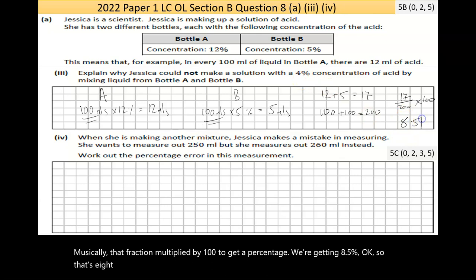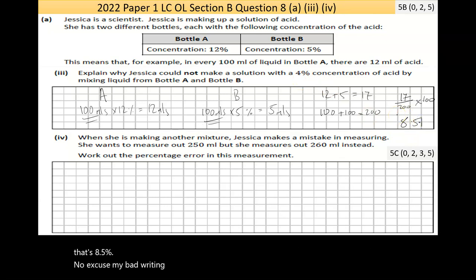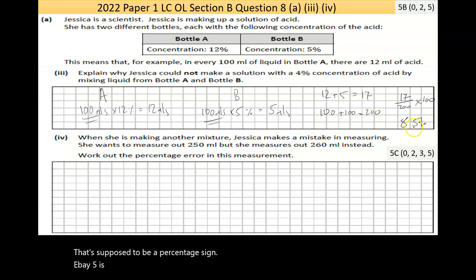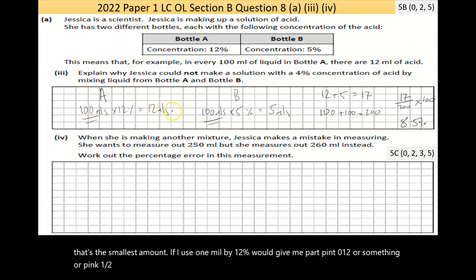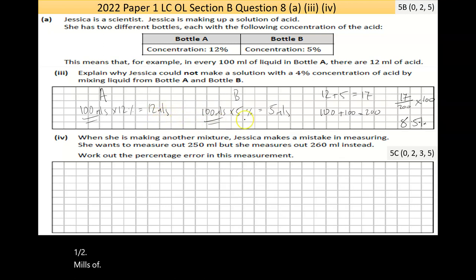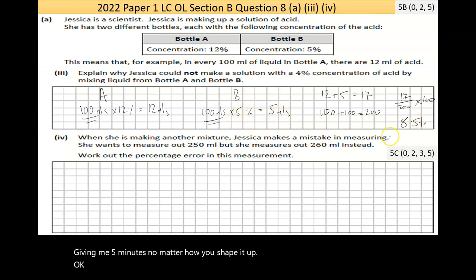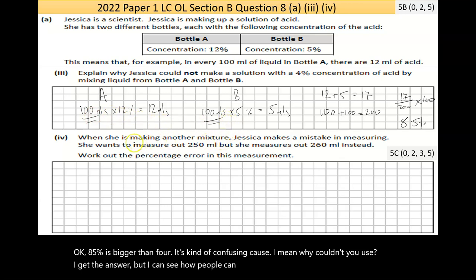So 8.5% is bigger than 4%. The minimum possible concentration from Bottle B alone is 5%, and mixing any amount of Bottle A (at 12%) only increases the concentration. So it's impossible to get below 5% — let alone 4% — by mixing these two bottles. That's a bit confusing at first but that's the reasoning.